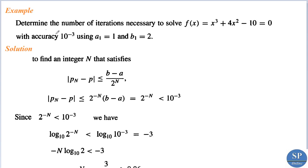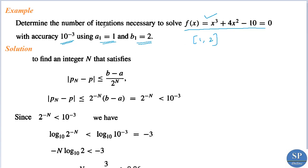Next we discuss an example. Determine the number of iterations necessary to solve f(x) = x³ + 4x² - 10 = 0 with accuracy 10^(-3), using a1 = 1 and b1 = 2, so our interval is [1, 2]. This is the problem discussed in the previous lecture.